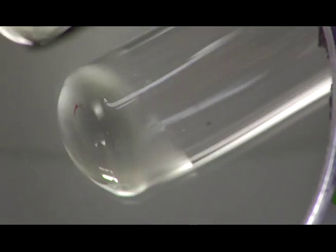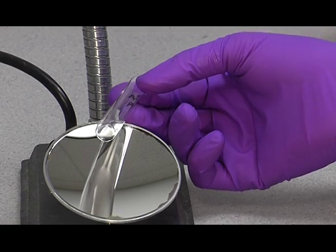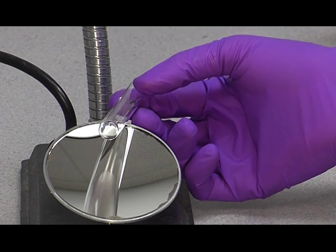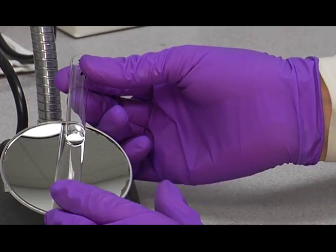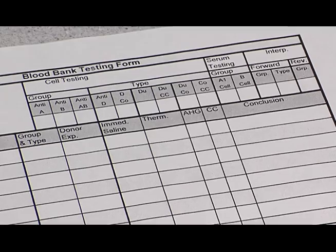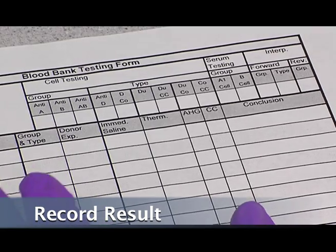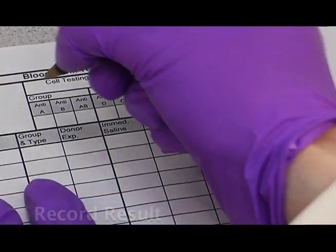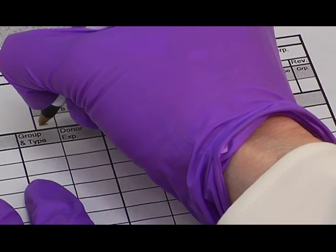Once the cells are completely off the button, then you can give it a little shake and roll the cells down the tube. You can see here that it's a nice negative result. As soon as you have read a tube, then you want to record the result on your result sheet right away. Don't save up your reactions and try to remember what they were.